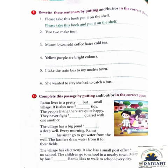Exercise F, page number 80: Rewrite these sentences by putting 'and', 'but', or 'or' in the correct places. Number 1: 'Please take this book ___ put it on the shelf.' The answer is: 'Please take this book and put it on the shelf.' Number 2: 'Two ___ two make four.' The answer is: 'Two and two make four.'